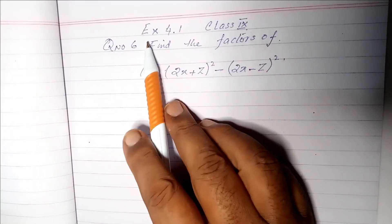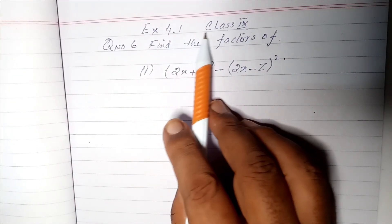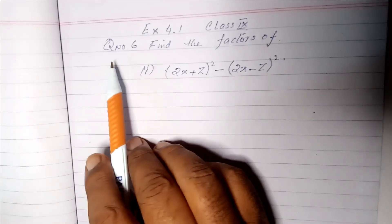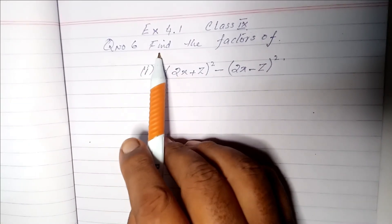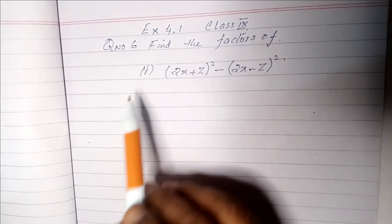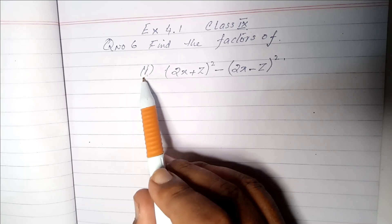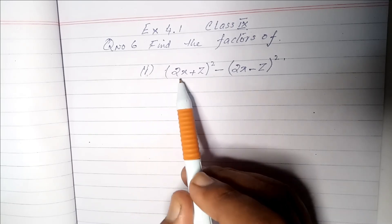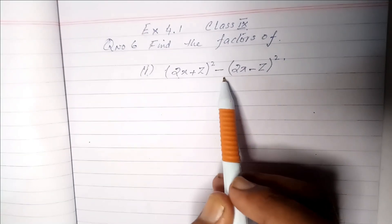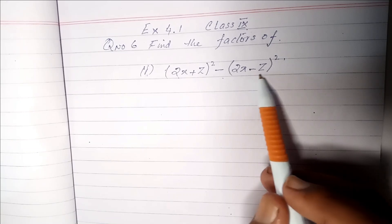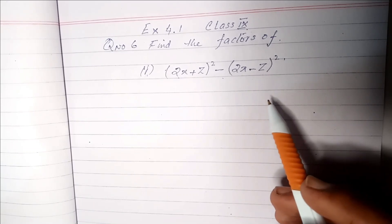Today's video is exercise number 4.1 class 9 question number 6. Find the factors of part 1: (2x+z)² - (2x-z)².